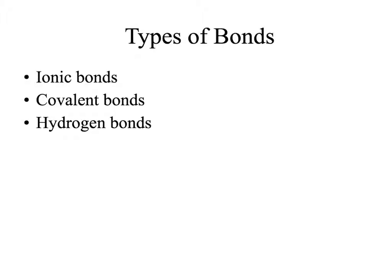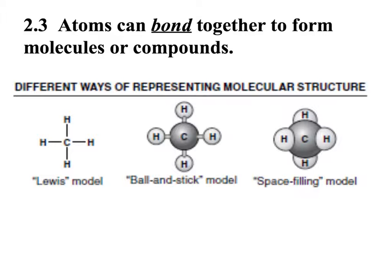To try to fill up their outer electron shells, atoms will form bonds with other types of atoms to try to complete their shells. There are 3 types of bonds we are going to look at: ionic bonds, covalent bonds, and hydrogen bonds. When bonds are formed between 2 atoms, we make molecules. There are many different ways to represent molecular structures. The Lewis model draws lines between the elemental symbols of each atom. Ball and stick model and space filling models also show us what these molecules might look like.